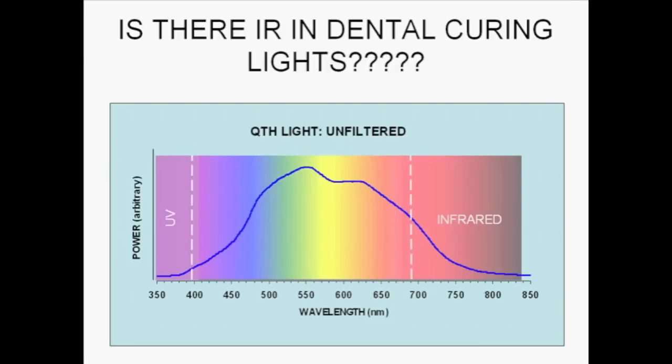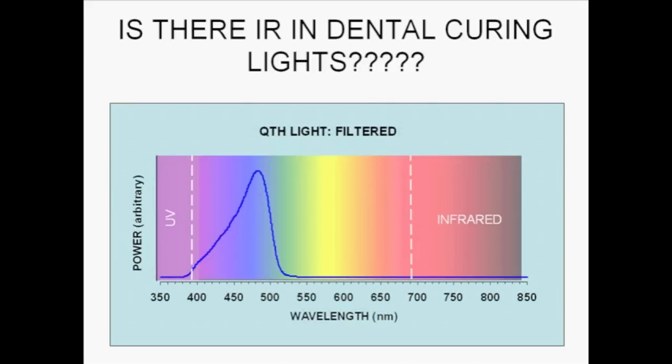As you can see, this type source emits abundant energy in all three spectral regions. However, when the light is filtered for clinical use, there is no infrared emission, or emission shorter in wavelength than that of green light.